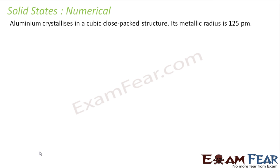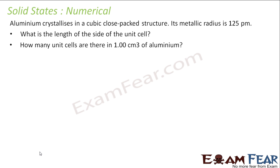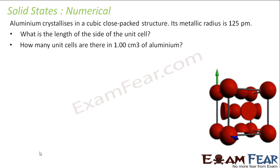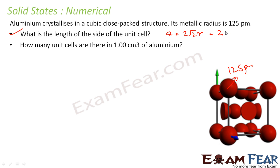Aluminium crystallizes in the cubic close-packed structure and its metallic radius is 125 pm. We need to find the length of its side. Using the formula a = 2√2·r, we get a = 2√2 × 125 pm, which gives approximately 354 pm. So the edge length of the unit cell is 354 pm.